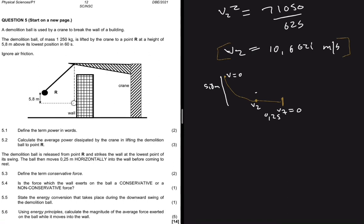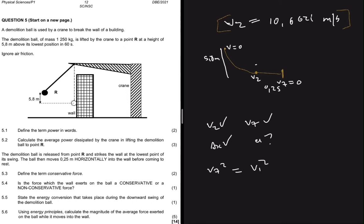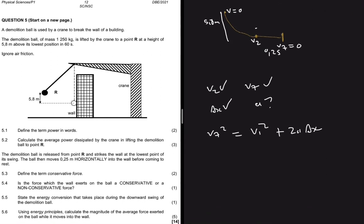So now we have v_2 and we have v_f and we have delta x, and then we need acceleration. The formula to use here is v_f squared equals to v_i squared plus 2a delta x.